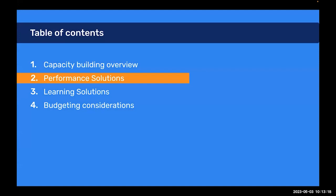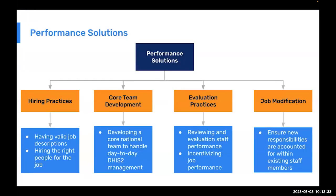Here are some examples of performance solutions. Hiring practices include making sure you have valid job descriptions for your staff — whether they're new staff, or whether you're modifying the jobs of existing staff members. You want to make sure their responsibilities are in line with what they actually have to do, so there is some accountability. We're going to talk about this core team concept quite a bit, and ideally every implementation should have a dedicated DHIS2 core team.